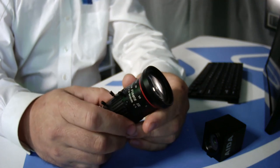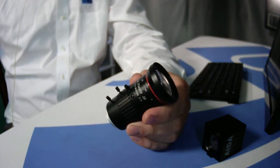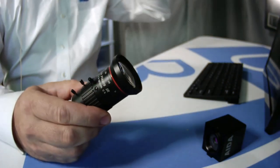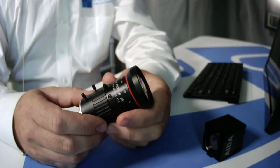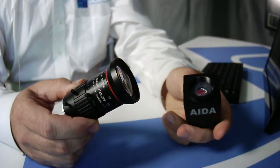This is the CS mount 5 millimeter to 50 millimeter varifocal megapixel lens, and this is a great HD lens for using with the HD100.